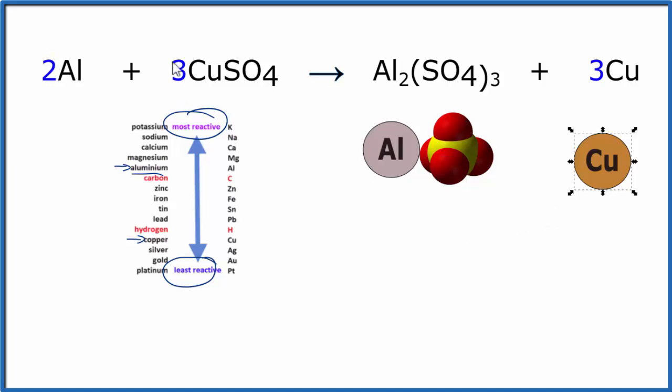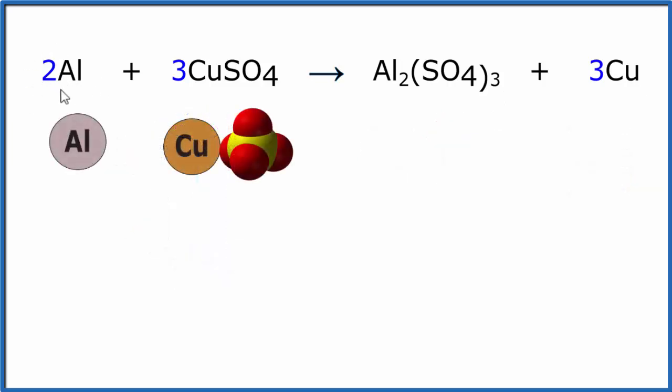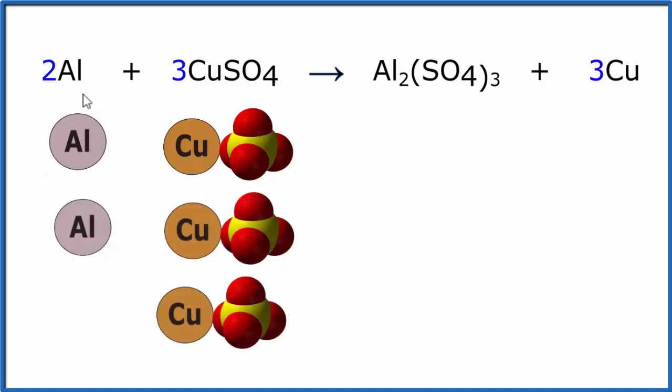Let's talk about these coefficients and subscripts here for a moment. So when we look at the coefficients, it tells us we have two aluminum atoms and three copper sulfates. So let's put those up here. So here's our two aluminum atoms, and then our copper sulfates.